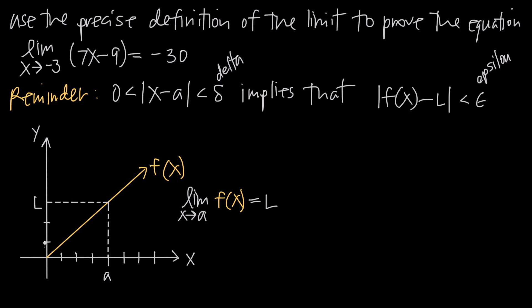Let's talk about what epsilon means. Epsilon is the distance we can move away from L. On this graph we have a made-up linear function f(x), where the limit as x approaches a equals L. As x gets really close to a — from either side — the value of the function gets really close to L. The closer we get to a, the closer we get to L.